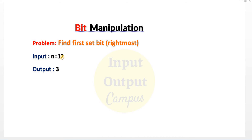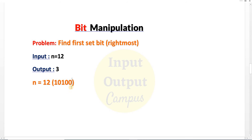You are given a number n equals to 12. After converting this decimal number into binary, we check the first set bit from the right side. When you find the first set bit, its position will be the output. Here n equals to 12, its binary representation is 1100, and from the right side the first set bit is at position 3, so the output will be 3.